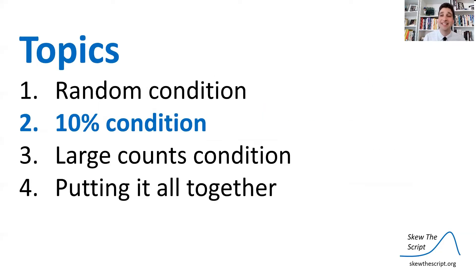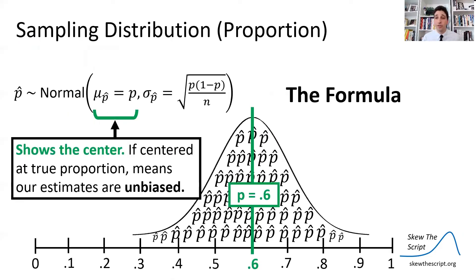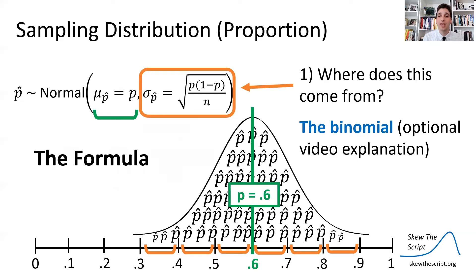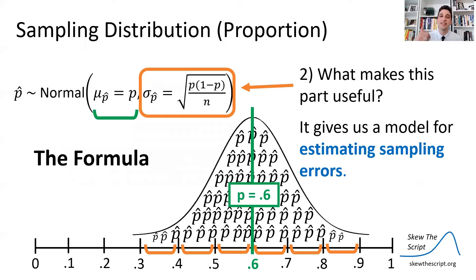Another condition we should think about is the 10% condition. We talked about the center — where we're centered at the true proportion for these polls. There's also some spread to this distribution. The formula for the spread comes from the binomial distribution through a long mathematical derivation. There's an optional video explaining it — you don't need to know the derivation for AP stats — but it's a very useful formula because it gives us a model for estimating sampling errors that happen by chance alone.